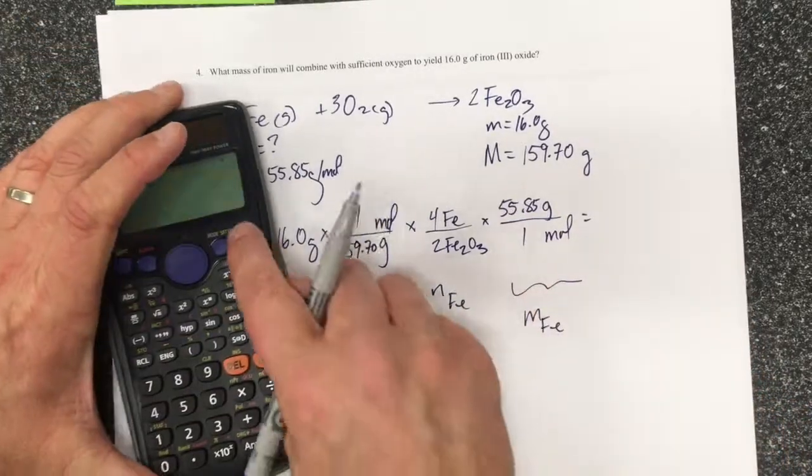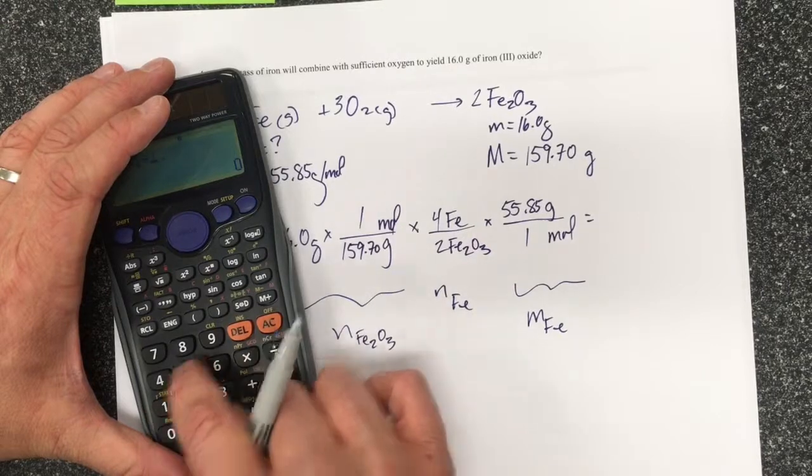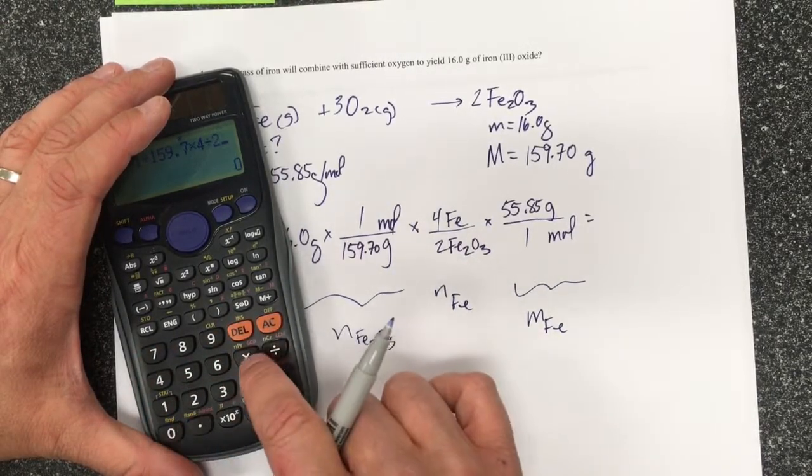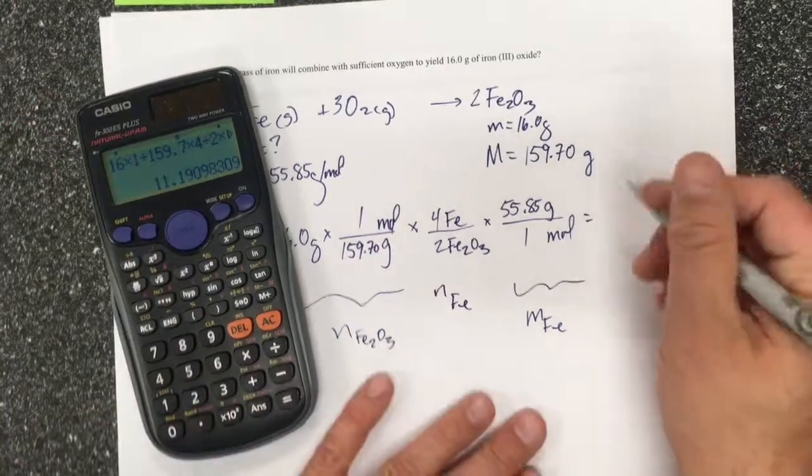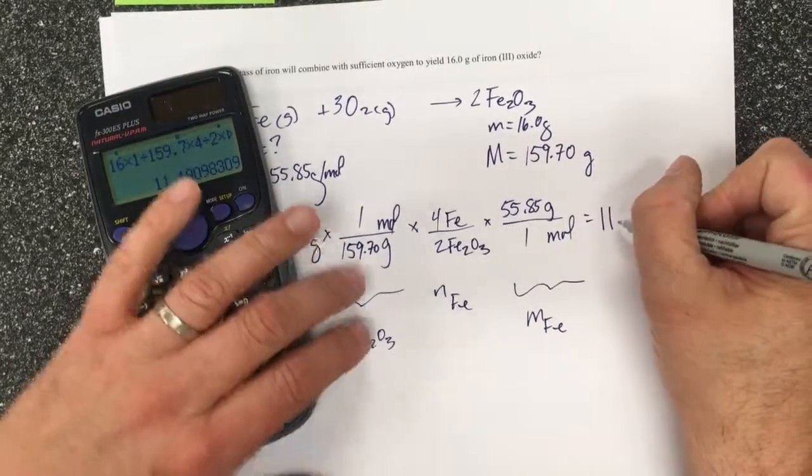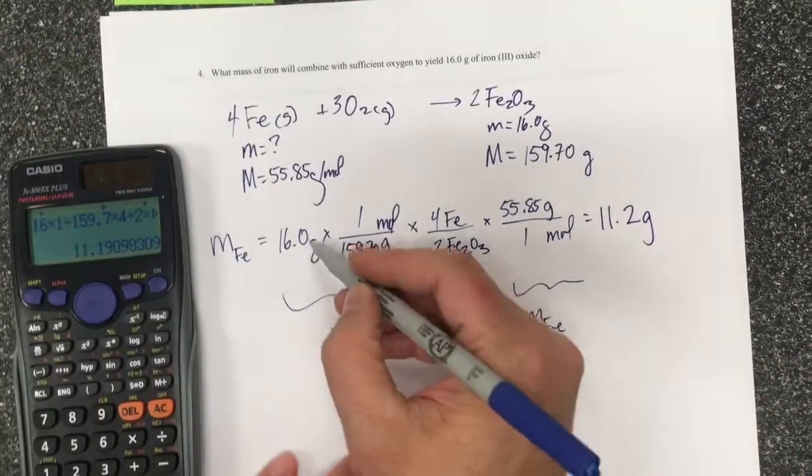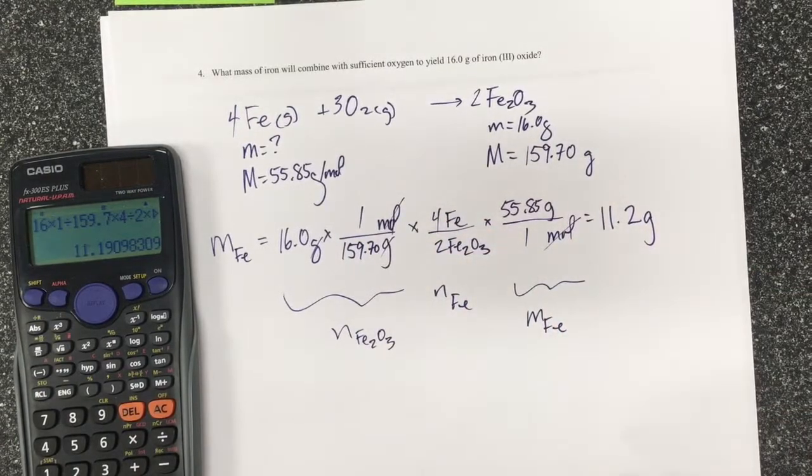And so if I put this into my calculator, I get 16 times 1 divided by 159.7 times 4 divided by 2 times 55.85 divided by 1. And I end up getting 11.2 grams of iron. And so my grams are cancelled out. Then my moles will cancel out and it leaves me with grams in the end.